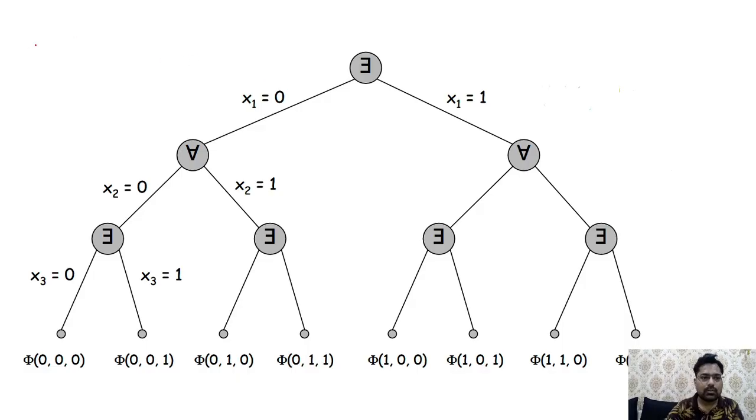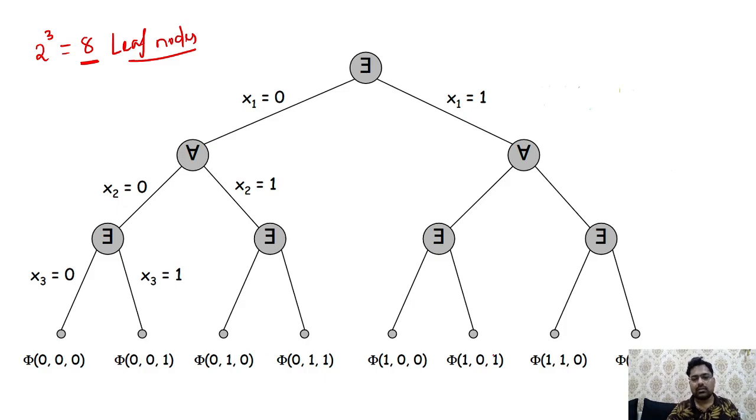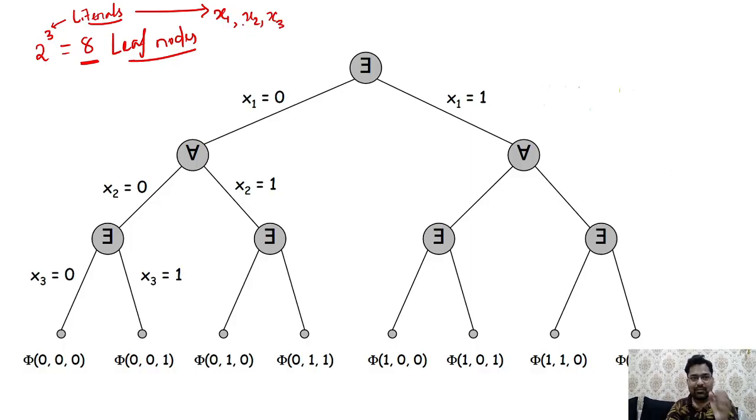So definitely the output or might be the children will be two. We are getting it because we introduced these three literals. We are introducing as you can say x1, x2, x3. Due to x1, x2, and x3, we are having three literals. So leaf nodes are expecting that.